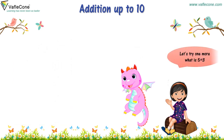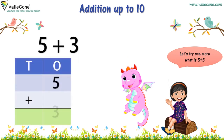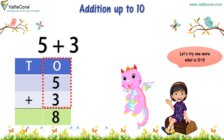Let's try one more. What is 5 plus 3? 5 and 3 are both one-digit numbers. Place 5 and 3 one over another and count: 6, 7, 8. The answer is 8!